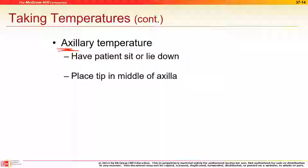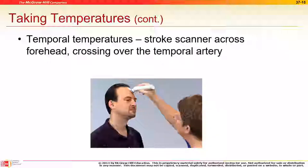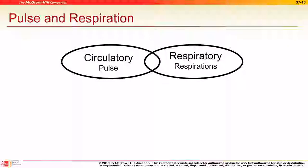For the temporal scanner, contact the forehead and scan across it. It will give a beep once it registers a temperature, then you're done. Wipe it with alcohol when finished. Pulse ties in with respiration — normal pulse range is 60 to about 100 beats per minute.